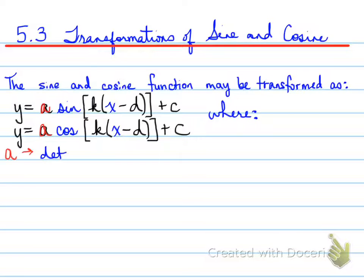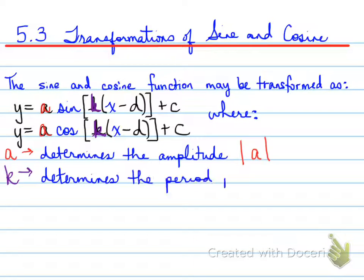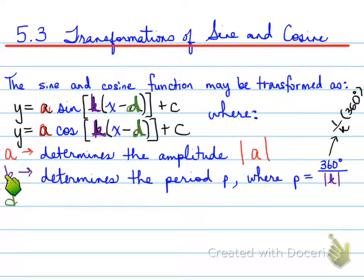Remember that A is the vertical stretch or compress, also known in a sinusoidal function as the amplitude. When we look at the amplitude, we only look at the positive value. So the absolute value of A indicates the amplitude of a sinusoidal function.